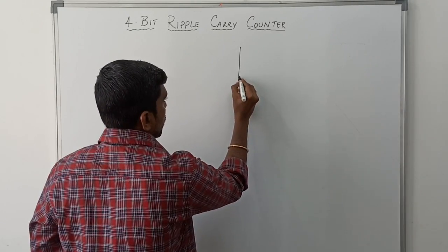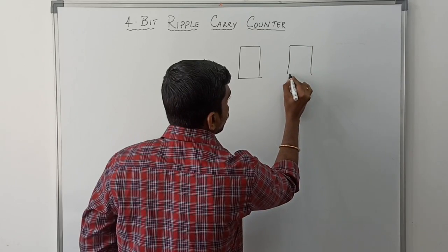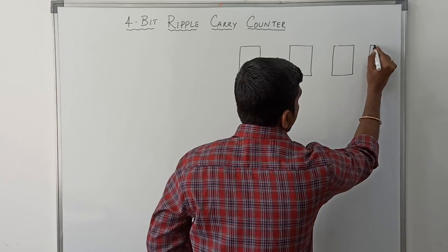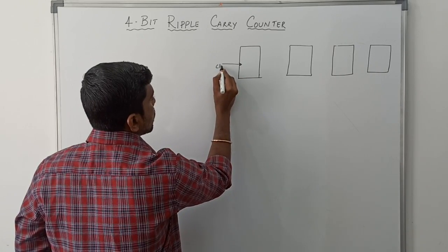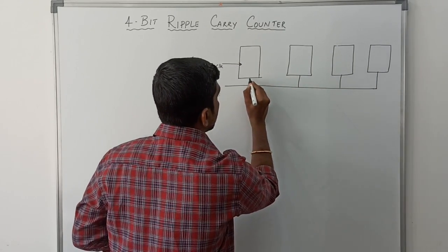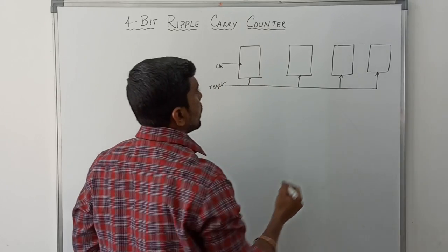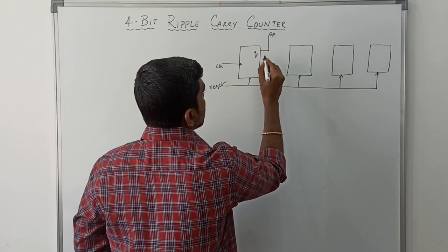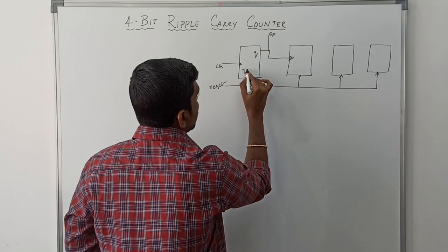This counter consists of T flip-flops. It is a 4-bit counter, so I draw 4 T flip-flops. Each flip-flop carries a 1-bit value. One of the inputs is clock, and the common input is reset for all 4 flip-flops. The input signal for T flip-flops, then the output of the flip-flop is Q. This one is Q0. Q0 value is given to the clock signal of the next T flip-flop.